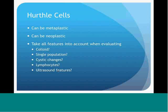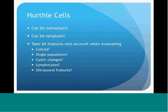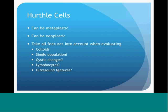Hürthle cells can be metaplastic or neoplastic, and all features need to be taken into account when evaluating them. Is colloid present? The more neoplastic a nodule, the less colloid is present. Is there a single population of Hürthle cells, or are they mixed with benign follicular cells suggesting metaplasia? Are there cystic changes—also suggesting metaplasia? Are lymphocytes present, suggesting Hashimoto's thyroiditis? And what are the ultrasound features? All of these must be considered.